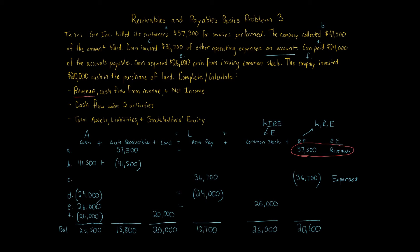The cash flow from revenue is the amount of cash actually received from the revenue. Looking at transactions A and B, we billed $57,300 but the company collected only $41,500 of the amount billed. The remaining $15,800 is still outstanding and has yet to be collected, so the cash flow from revenue is only $41,500.